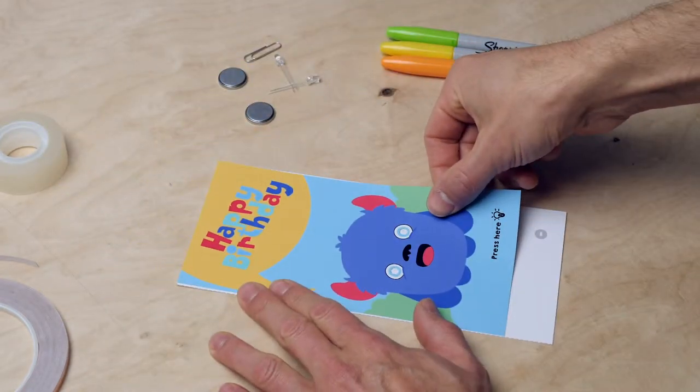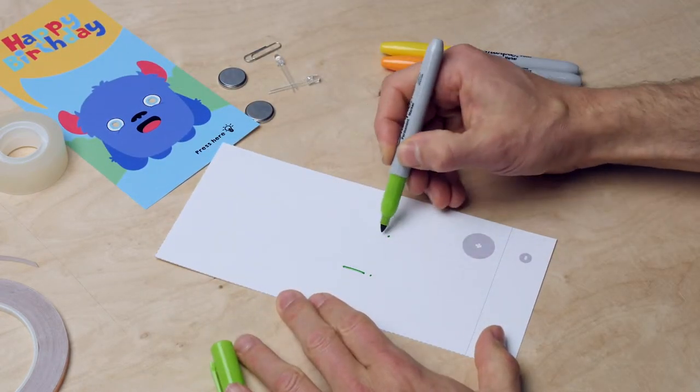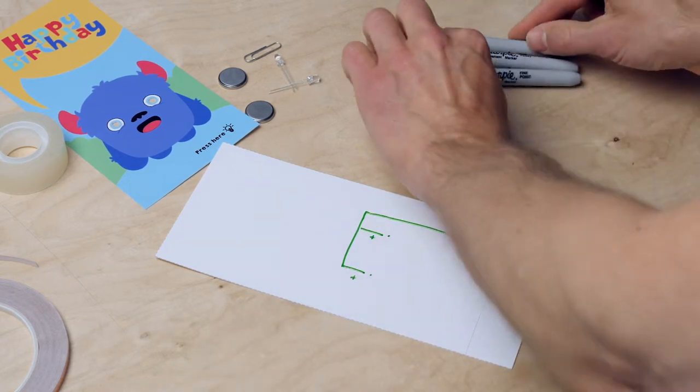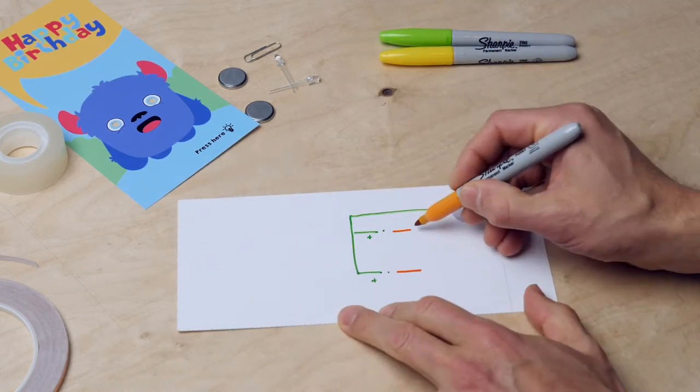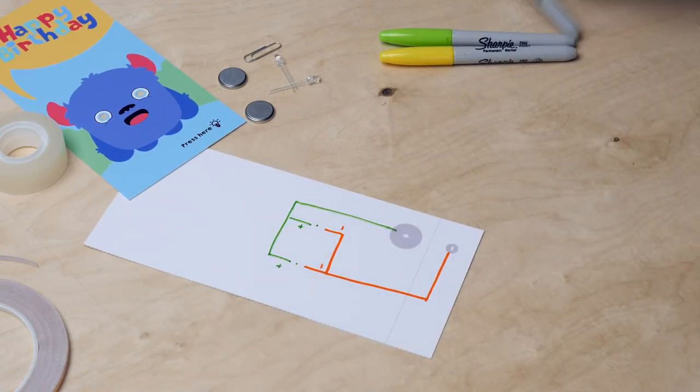And now draw the circuit on the other card. Indicate where the plus and the minus sides of both the battery and the LEDs will be. Make sure that they're on the correct side. This can be very tricky. Such a drawing is also called a current diagram or a flow diagram.